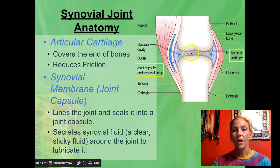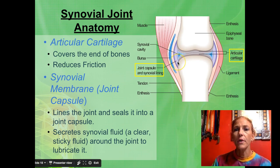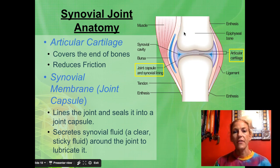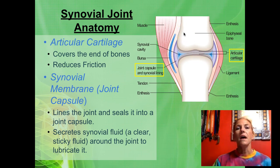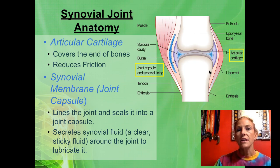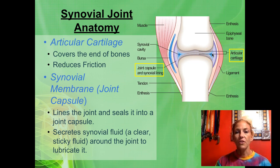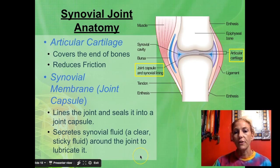Some injuries occur when the articular cartilage begins to deteriorate. With no protection, you have two bones rubbing together, breaking down the epiphysis, which can lead to arthritis. Then there's the synovial membrane — shown here in purple — connecting the two bones. It's continuous with the periosteum, and that connective tissue produces synovial fluid, which fills the synovial cavity and acts as a lubricant to reduce friction between bones.